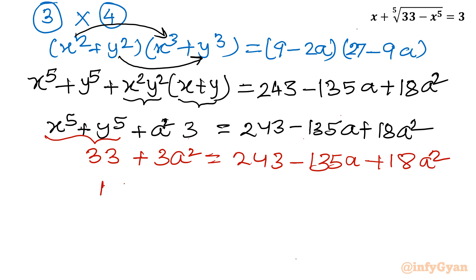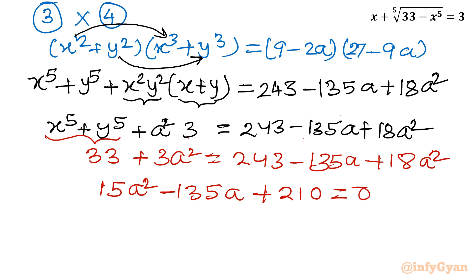Taking all terms to the right-hand side: 18 minus 3 gives 15a^2, minus 135a, and 243 minus 33 gives 210. This equation is divisible by 15. Dividing through by 15: a^2 minus 9a plus 14 equals 0.